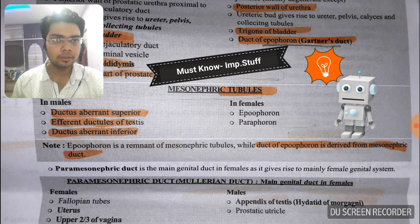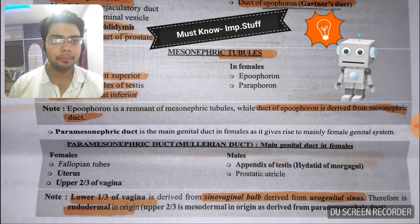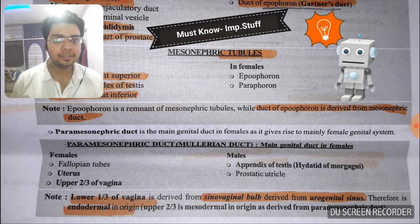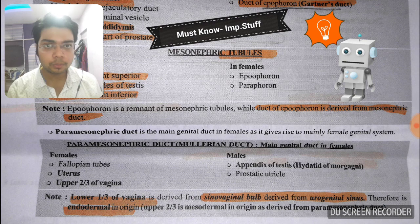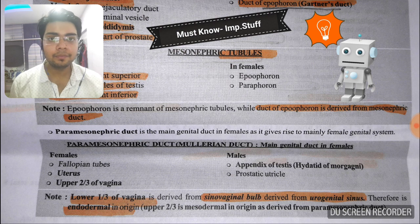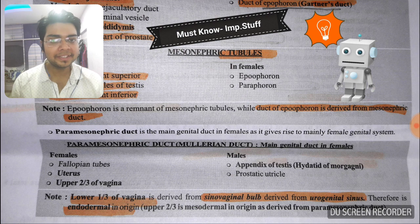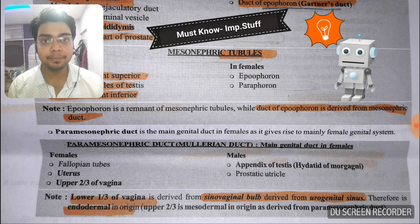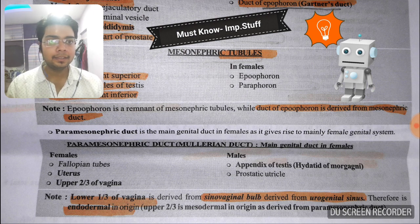From the paramesonephric duct in females, the main female genital duct structures develop: the fallopian tube, uterus, and the upper two-thirds of the vagina. The lower one-third develops from the sinovaginal bulge, which is derived from the urogenital sinus. Therefore, the lower one-third of the vagina is of endodermal origin, while the upper two-thirds is of mesodermal origin.